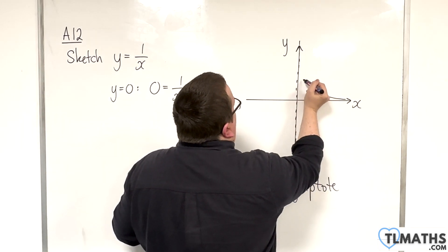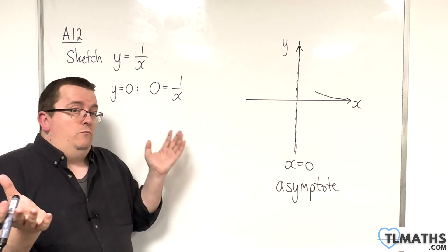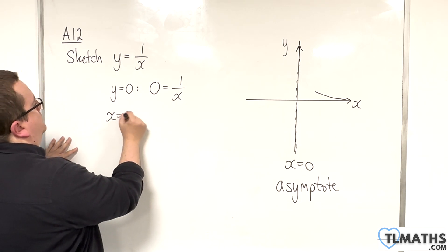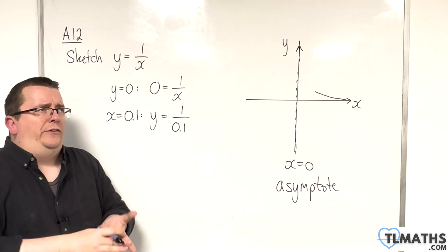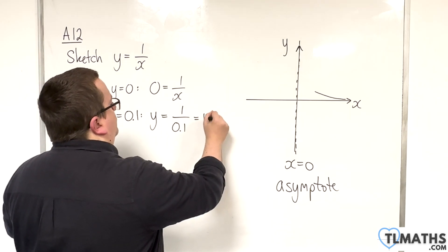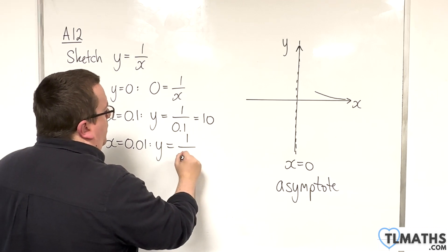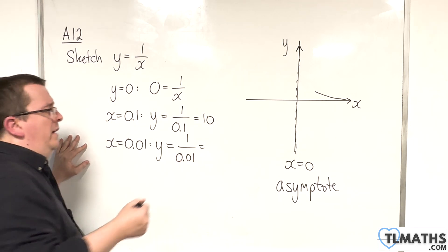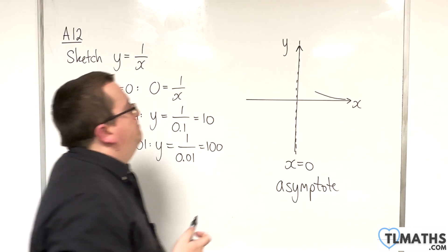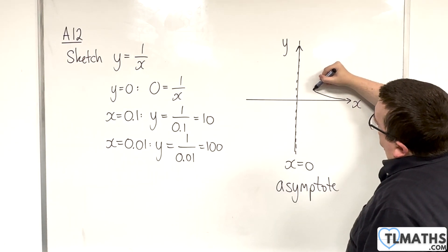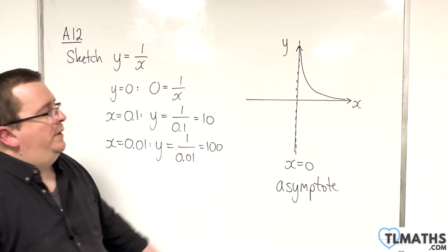As x gets closer and closer to 0 — for example, x equals 0.1 — then y equals 1 over 0.1, which is 10. And if x equals 0.01, then y equals 1 over 0.01, which is 100. So as x gets closer to 0, y is getting larger and larger. The curve does this — it tends towards the vertical asymptote, getting closer and closer to it.